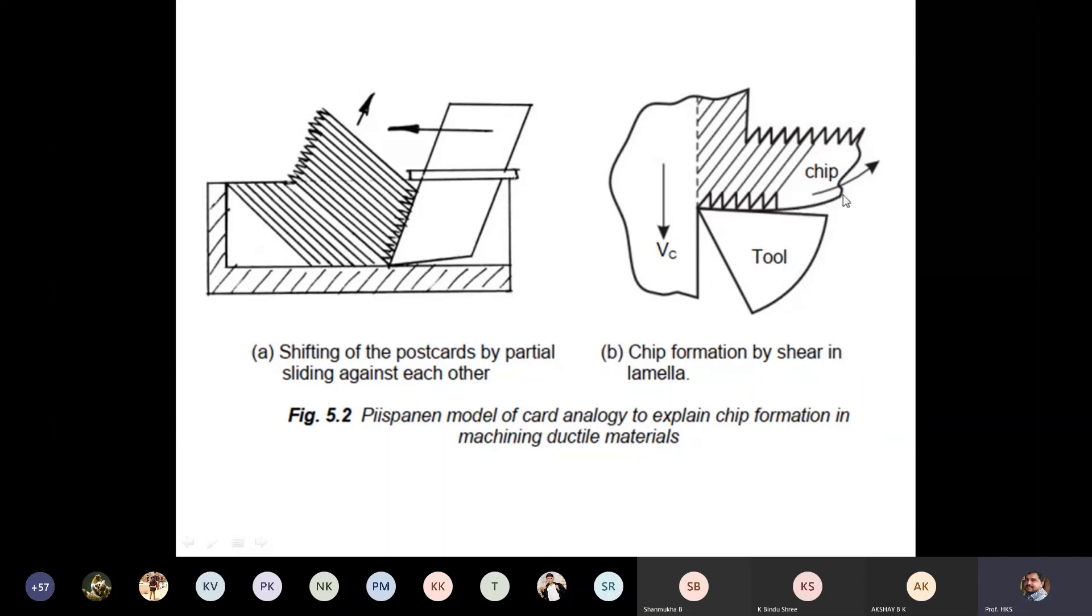This is the chip which is almost similar to a spring-like structure which you saw in the video. This is one layer, this is one layer, this is one layer, but here it looks like it has a smooth surface at the bottom.